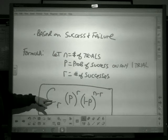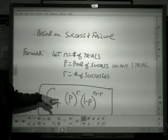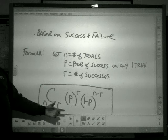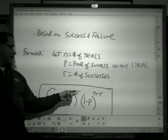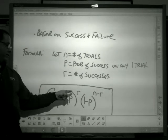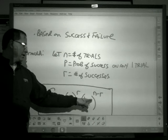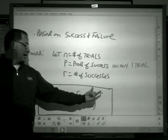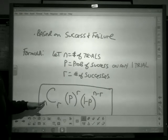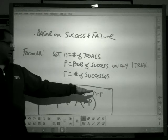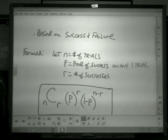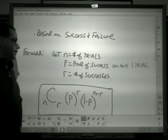This is the formula that we generated in class. This combination: out of all the trials, how many successes are we looking for, times the probability of success to the number of successes we're looking for. Failure is one minus the success. And failure would be, out of all the trials minus the successes, that's how many failures we're looking for. We worked on and developed that formula in class today.